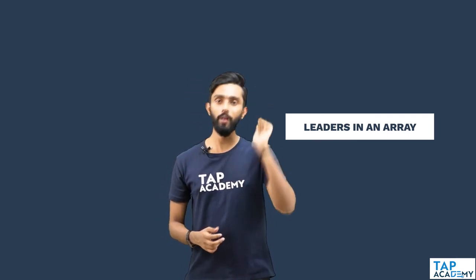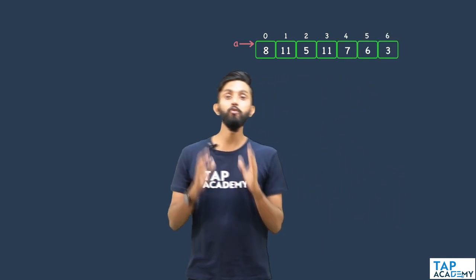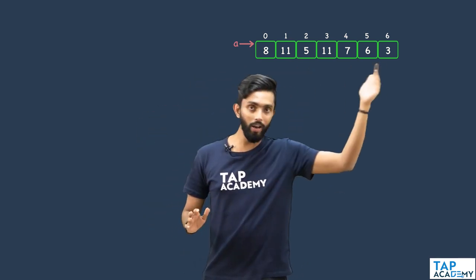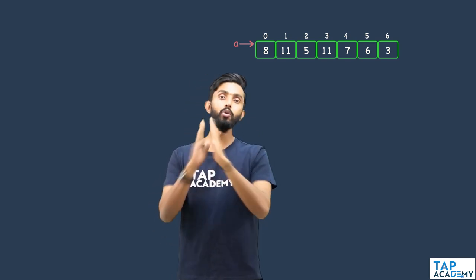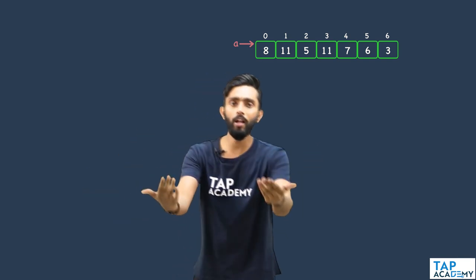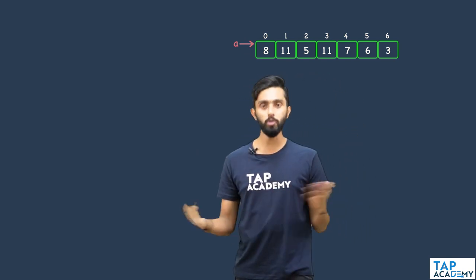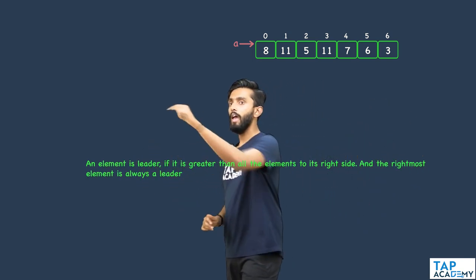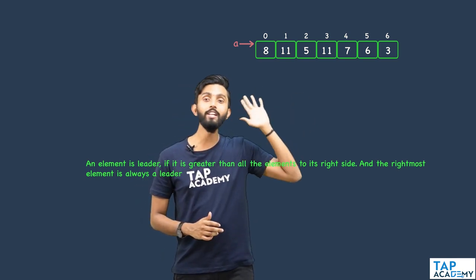Why is this question unique? Let me explain. Assume this is an array given to me. In this array, there are few elements which can be called as leaders. You must identify such elements which are leaders and print them. An element is a leader if it is greater than all the elements to the right side.